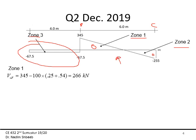To do the design, we first compute Vu. Since Vu is computed at distance d from the face of the column, this becomes: Vu = 345 − 100 × (0.5/2 + d). Computing that gives Vu = 266 kN.